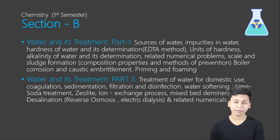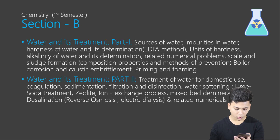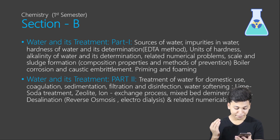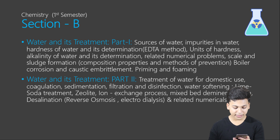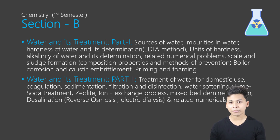The second section involves water treatment, which is again divided into two parts. Water treatment one talks about sources of water impurities, the unit of hardness, alkalinity of water, boiler corrosion, and caustic embrittlement. Water treatment two covers lime soda treatment, zeolite ion exchange process, sedimentation, and filtration. Section B is going to be a little easier than the other sections because there are not many numericals involved, so you'll be able to score well here.